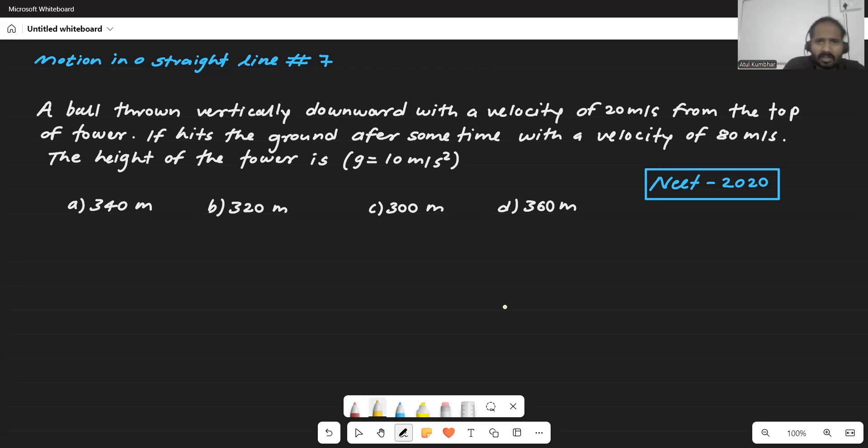So here we have some initial and final velocity. So here we have a small tower. Now this tower is on top.